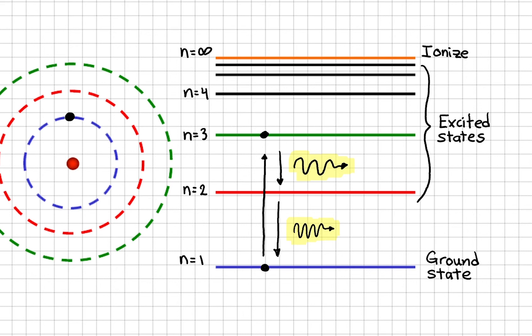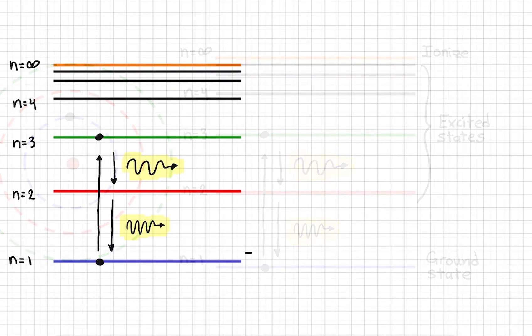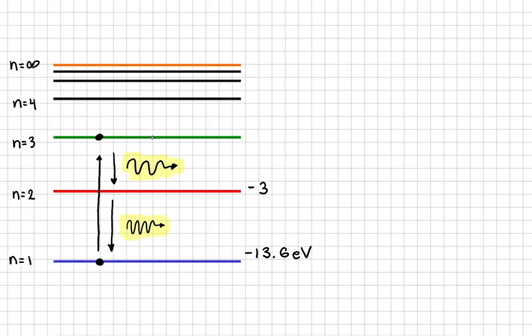We can work out each photon's wavelength if we know exactly what these energy levels are. By convention, the energies are given in electron volts and written with a negative sign in front. And when the electron is ionized, the energy is zero because it no longer experiences the attraction to the nucleus.